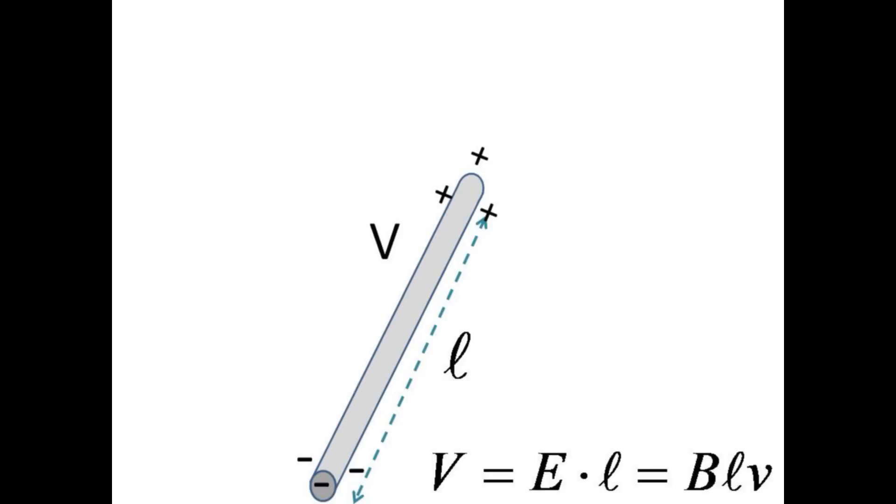Furthermore, the electric field acting over the length L of the conductor leads to a voltage drop between the two ends. This voltage is the induced EMF and is given by the product of B, L, and V.